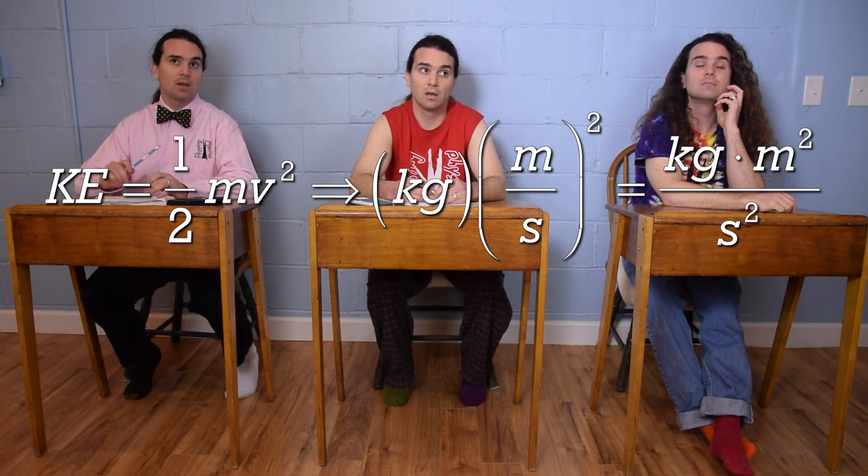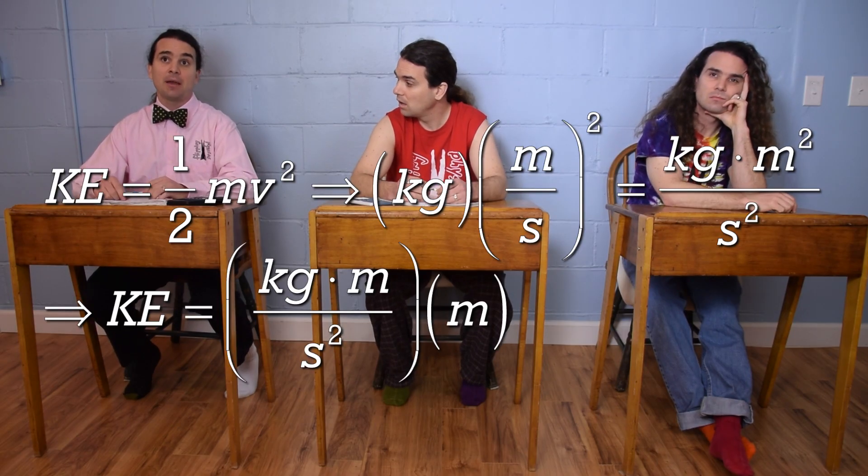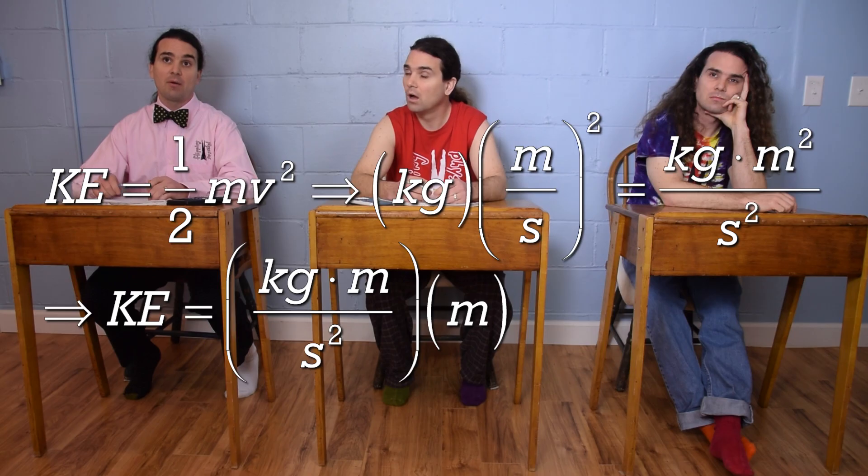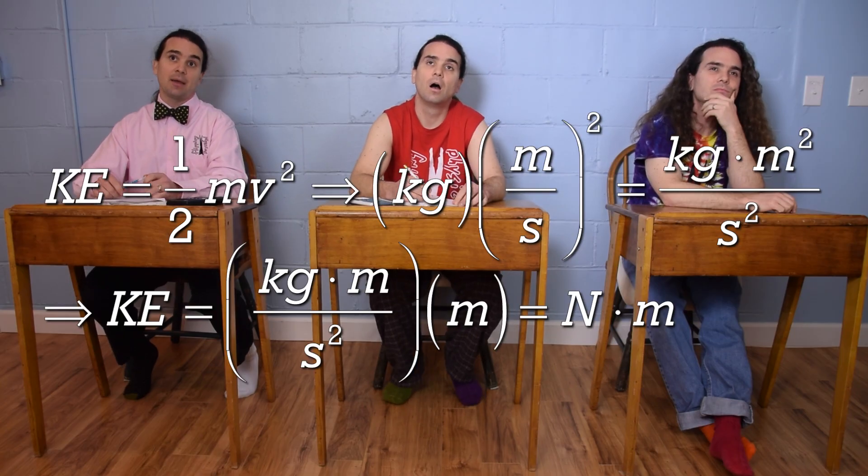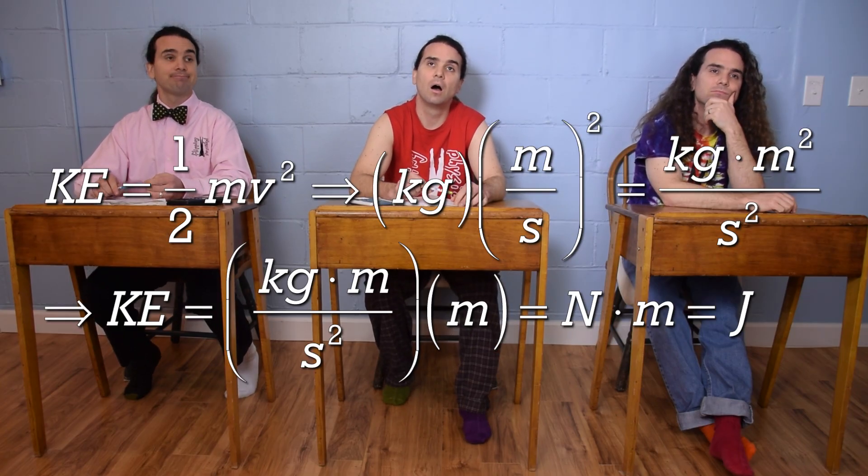And that looks out to be joules? Yes, because that equals kilograms times meters over seconds squared times meters, so you can substitute in newtons for kilograms times meters divided by seconds squared, and you get newtons times meters, which is joules. Very nice.